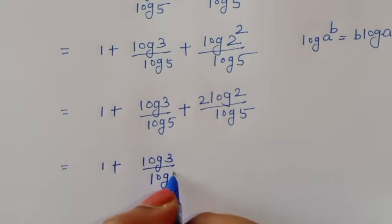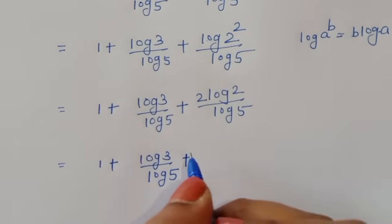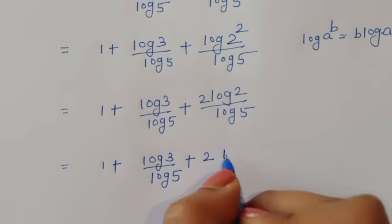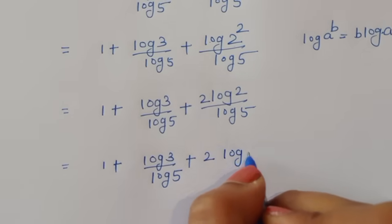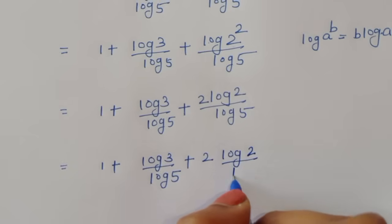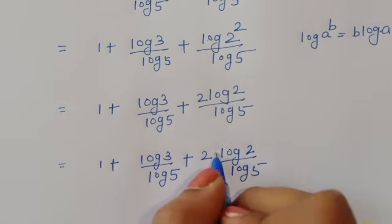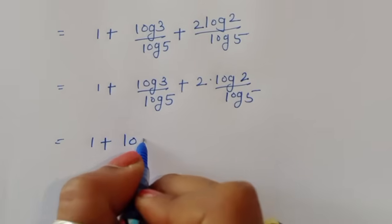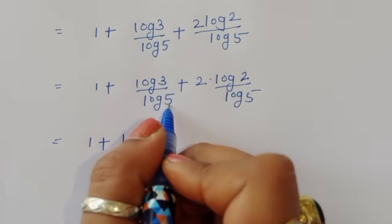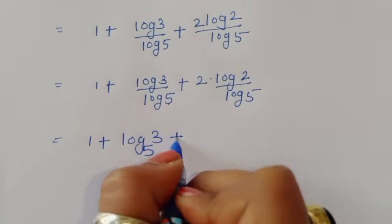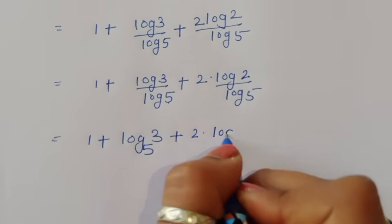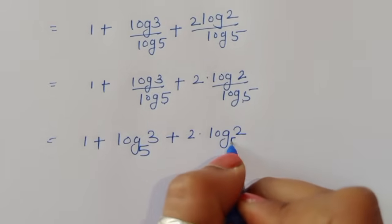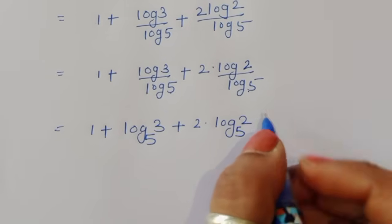So the final value of x is equal to 1 plus log of 3 to the base 5, plus 2 times log of 2 to the base 5.